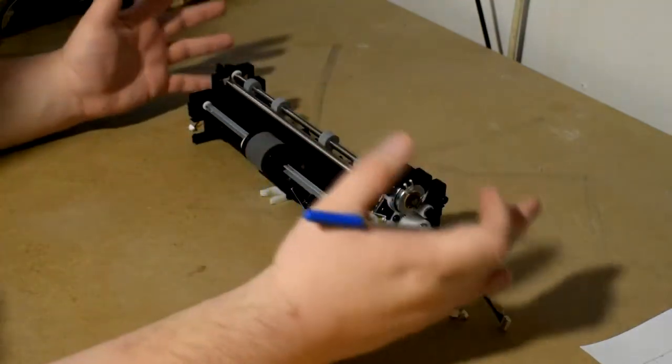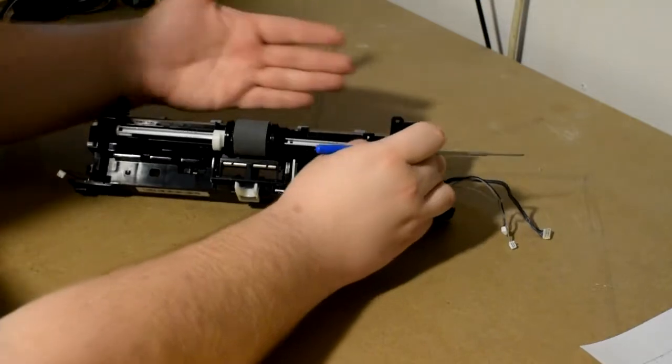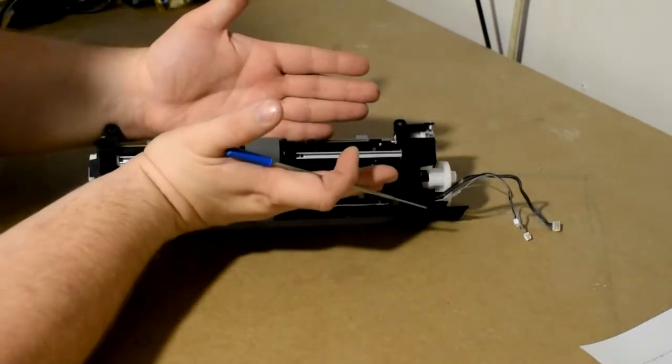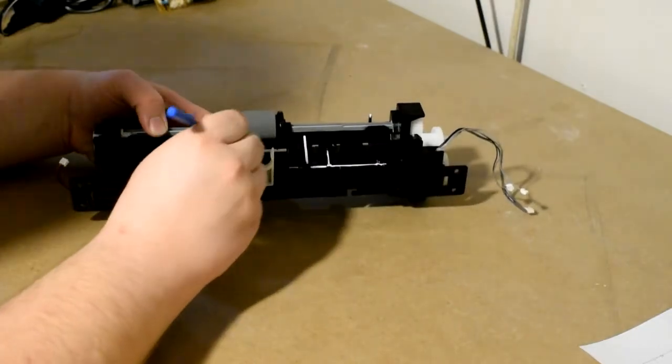This just happens to be the one I had lying around. The only part you see is going to be from here forward, and there's going to be a tray. That's the main pickup roller, and below is the separation pad.